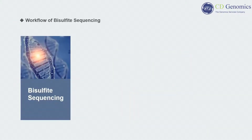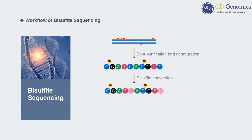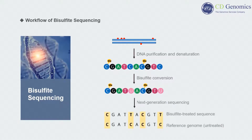Bisulfite sequencing is a next-generation sequencing-based method that examines DNA methylation through bisulfite conversion, which converts unmethylated cytosine to uracil while methylated cytosine residues remain unmodified. The treated sample is then subjected to purification and library amplification, followed by deep sequencing and data analysis.